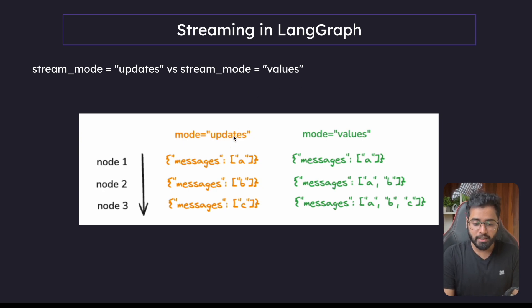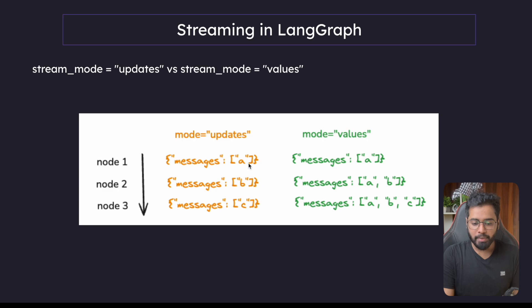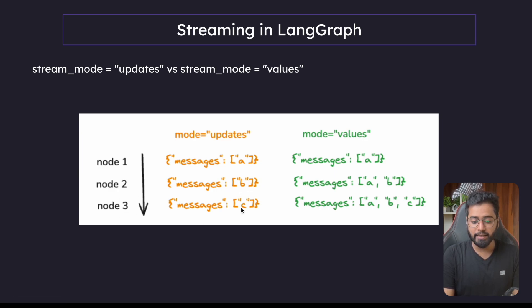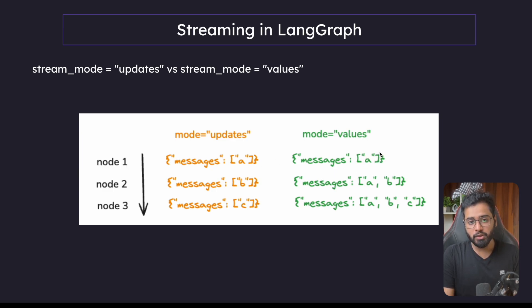Let's look at a pictorial representation of the difference between stream mode updates and stream mode values. With stream mode updates, we only see what value has been updated. We have nodes 1, 2, and 3. Node 1 updates A — initially the list is empty so node 1 just adds A. Node 2 appends B to the list, and node 3 appends C. So we see just A, then B, then C. With stream mode values, after the execution of the first node we get the entire state — a list with item A. After node 2, we see the entire state at that point, and the same for node 3.